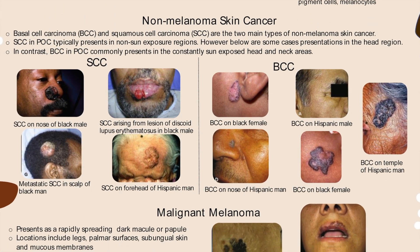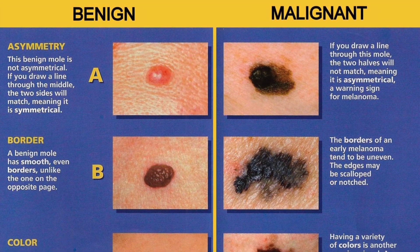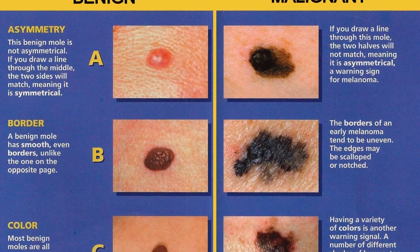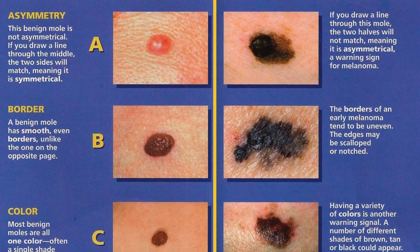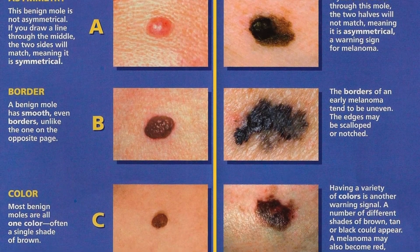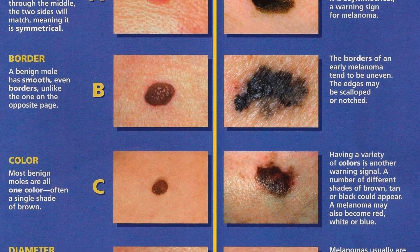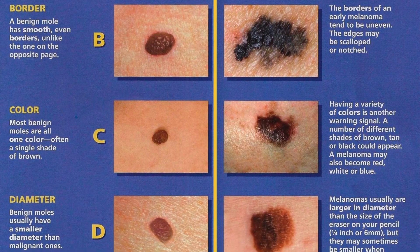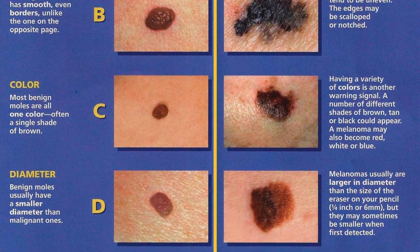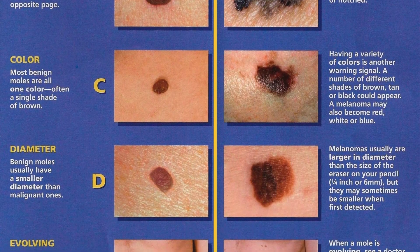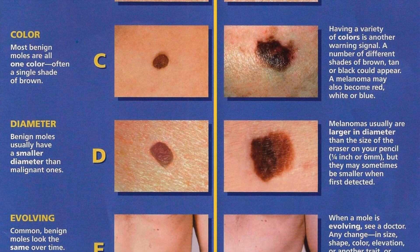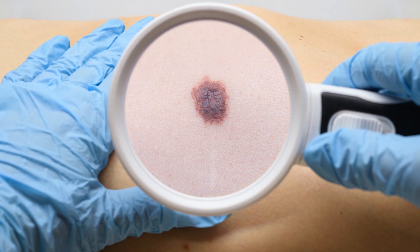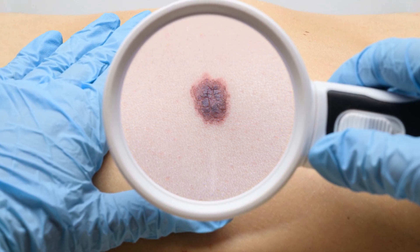Melanoma signs include a large brownish spot with darker speckles; a mole that changes in color, size, or feel, or that bleeds; a small lesion with an irregular border and portions that appear red, pink, white, blue, or blue-black; a painful lesion that itches or burns; dark lesions on your palms, soles, fingertips, or toes; or on mucous membranes lining your mouth, nose, vagina, or anus.